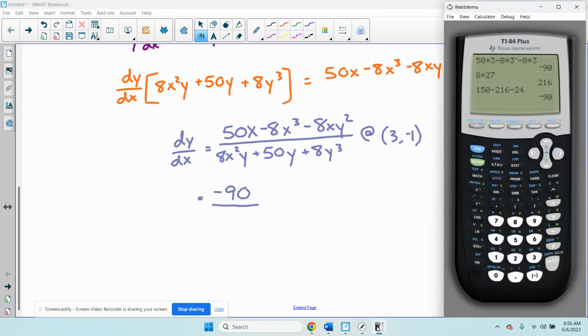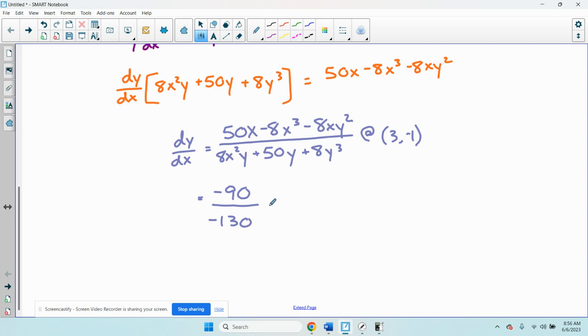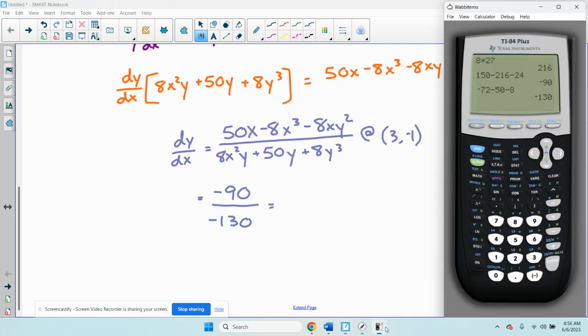The bottom, 8 times 3 squared times negative 1, that's 8 times 9 times negative 1, that's negative 72 plus 50 times negative 1, so that's minus 50, plus 8 times negative 1 cubed, 8 times negative 1, that's minus 8. We get negative 130 on the bottom. So if I divide 90 divided by 130, I get 0.6923.